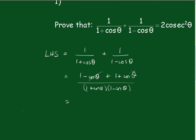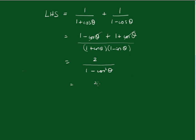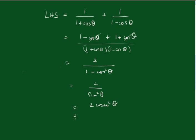These terms cancel, we get 2 over 1 minus cos squared theta, which equals 2 over cos squared theta, which of course is the result. So that's equal to the right hand side. Therefore, the left hand side equals the right hand side.